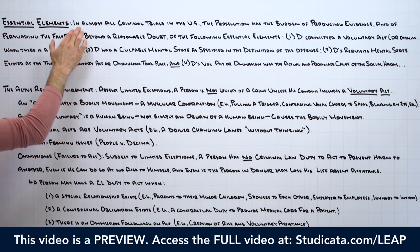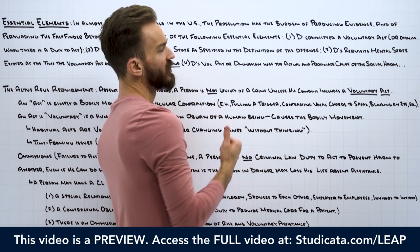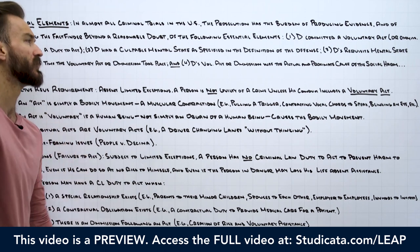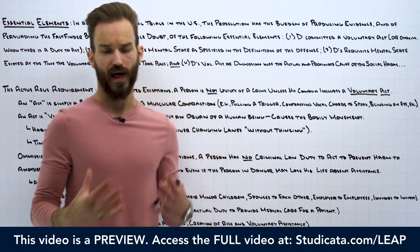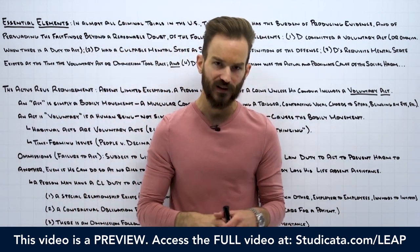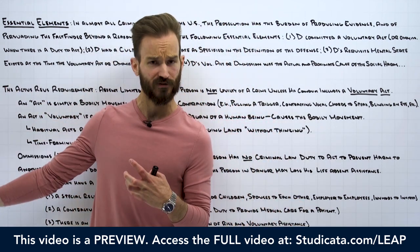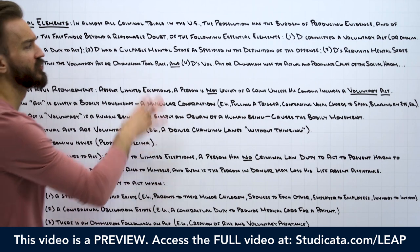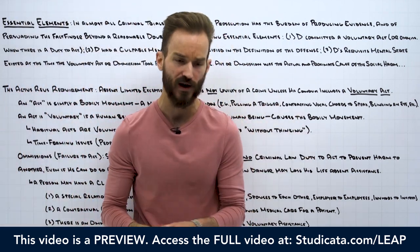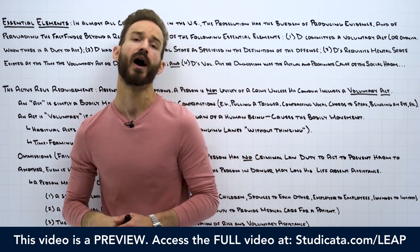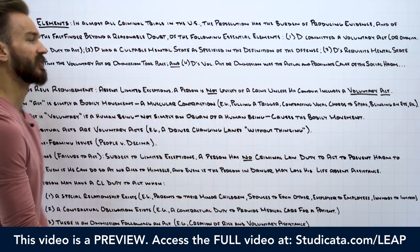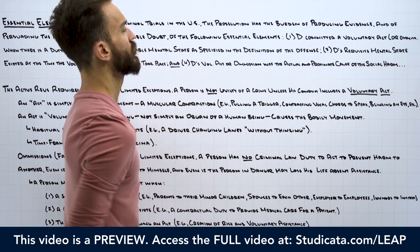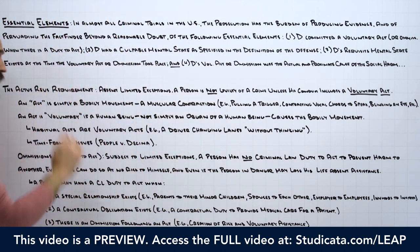But big picture, in almost all criminal trials in the United States, the prosecution has the burden of producing evidence and of persuading the fact finder beyond a reasonable doubt of the following essential elements. So from very minor offenses, minor theft offenses, to very serious offenses like first-degree murder, the prosecution is going to have the burden of establishing these four essential elements.